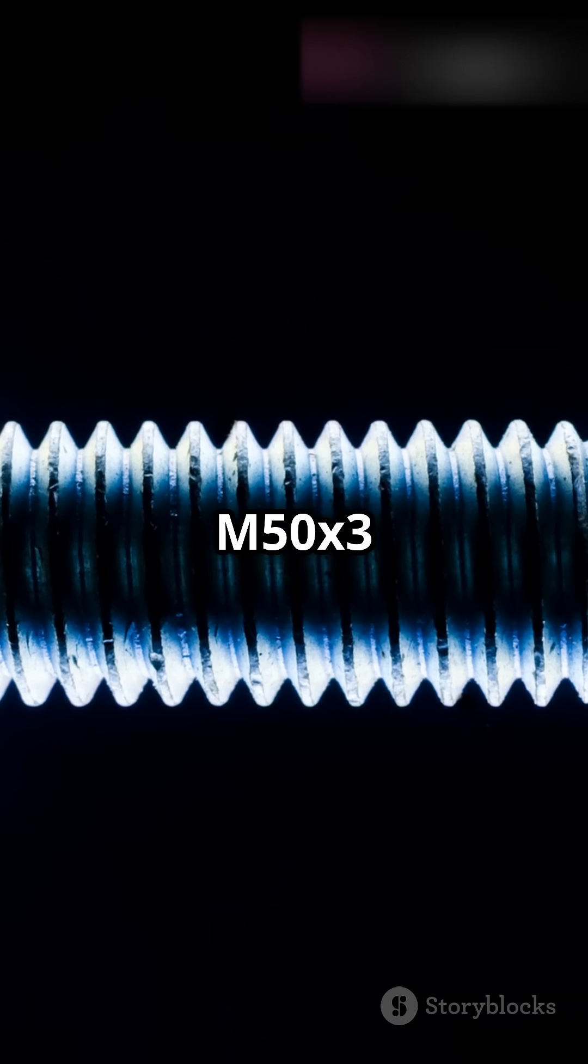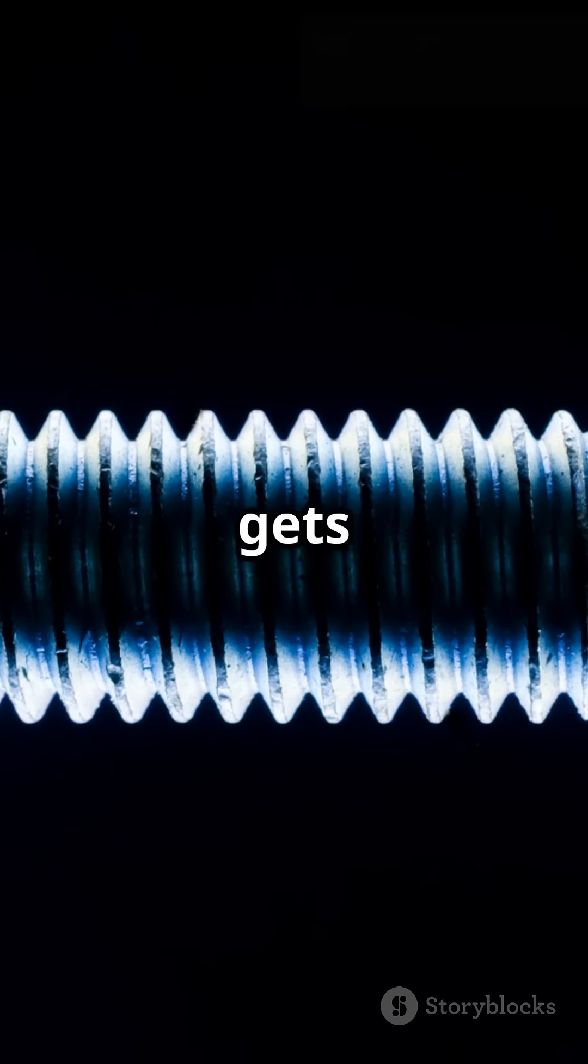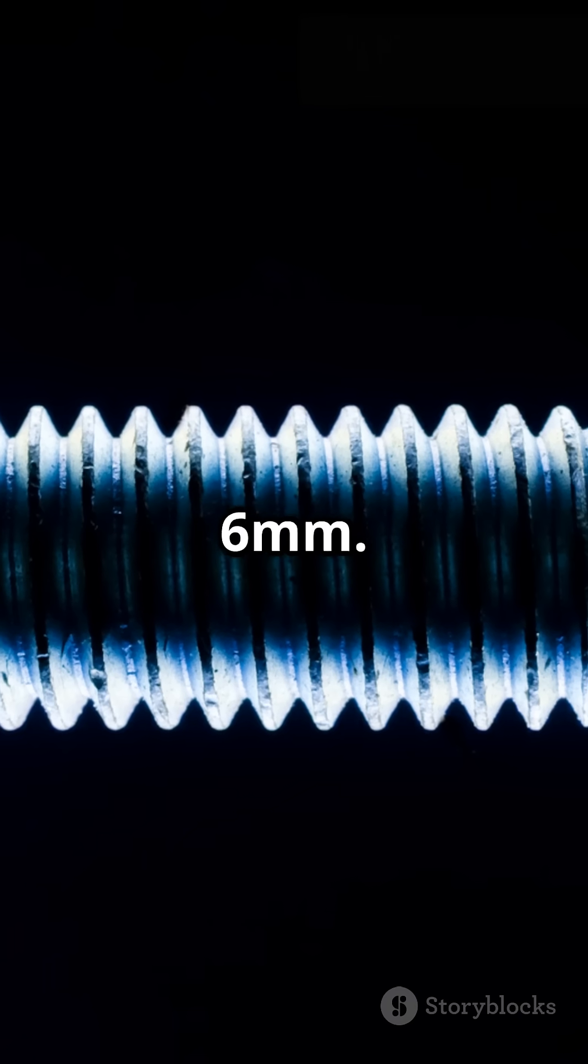For a 2-start M50X3 thread, you have two threads running in parallel. This means the pitch gets doubled, making it effectively 6mm.